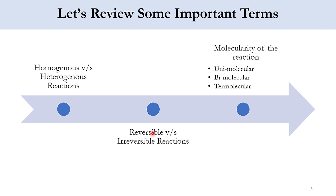Second is reversible and irreversible. If the reaction proceeds in one direction, like A plus B produces C, we say it's an irreversible reaction. But if C comes back to produce A and B, then we say it's a reversible reaction.